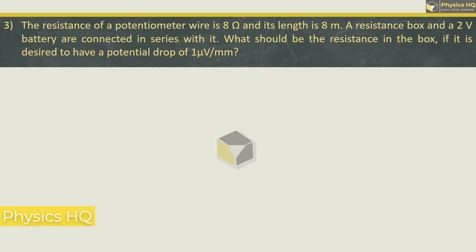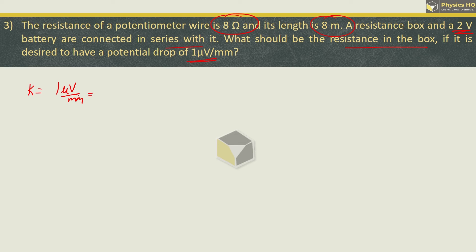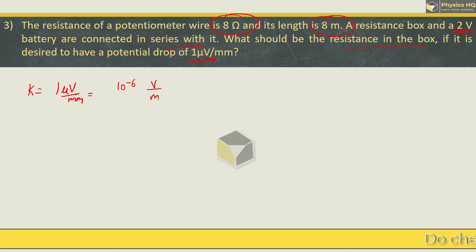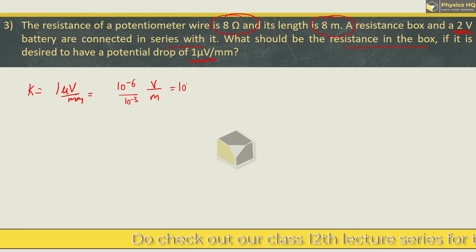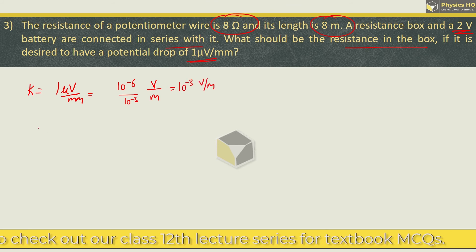The resistance of a potentiometer wire is 8 ohm and its length is 8 meter. A resistance box and a 2 volt battery are connected in series with it. We need to find the resistance in the box if a potential drop of 1 microvolt per millimeter is desired. Converting units: 1 microvolt per millimeter equals 10⁻⁶ divided by 10⁻³, which gives 10⁻³ volt per meter. So K = 10⁻³ V/m.